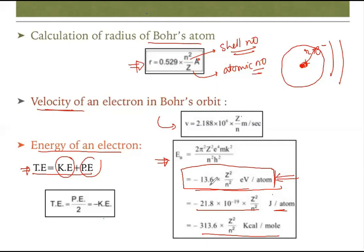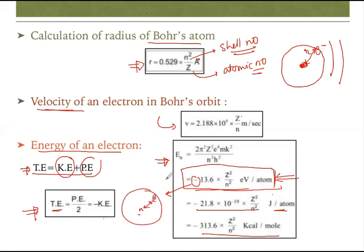Using the formula En = −13.6 z²/n², remember also that total energy equals potential energy divided by 2, which equals minus the kinetic energy. The minus sign represents the attractive force between the nucleus and the electron.